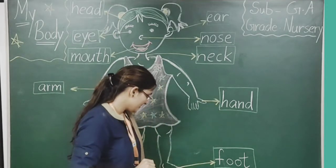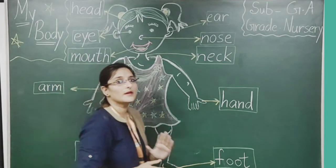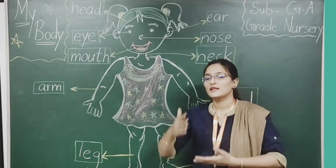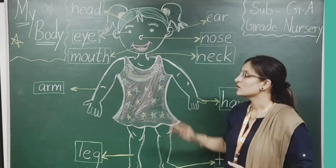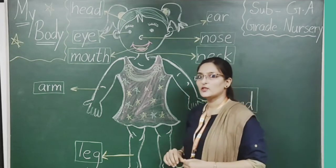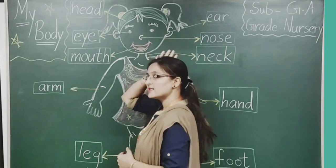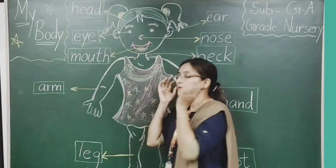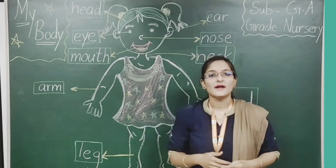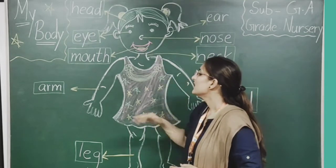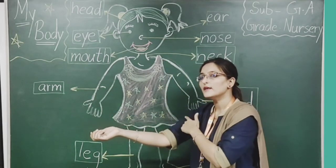Next is foot. See here — this is the foot, which is the leg. With the help of feet we walk and run, and move from one place to another. So let's recall: head means sir. Next — eye means our eye. Mouth means our mouth.